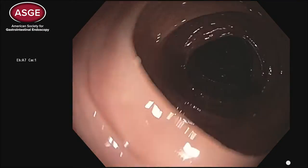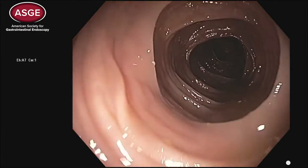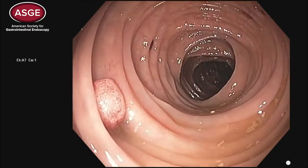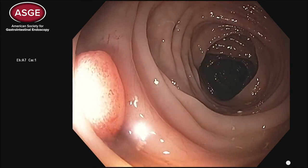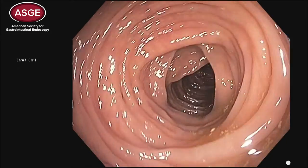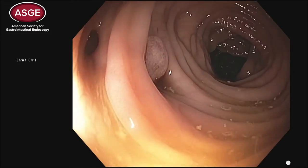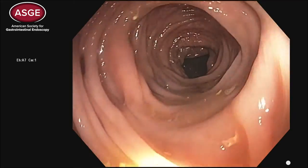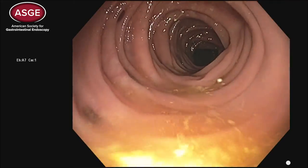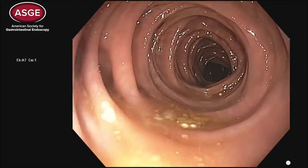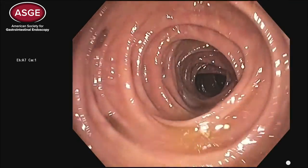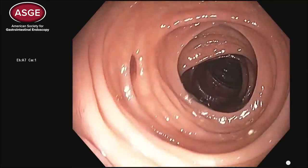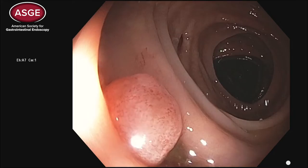Congratulations if you answered granulation tissue in a diverticulum. This is something we reported seeing about one in every 125 to 150 routine colonoscopies. We reported this a number of years ago.